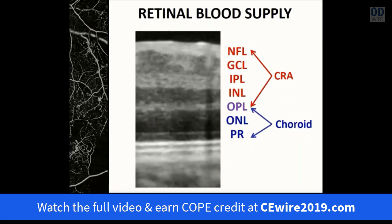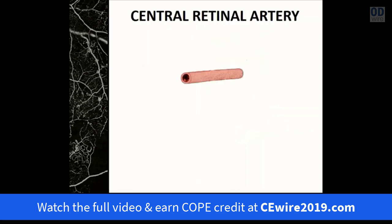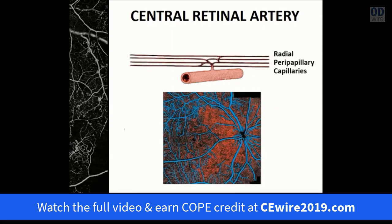The neurosensory retina is nourished by a dual blood supply, consisting of both the central retinal artery, which supplies the inner layers of the retina, and the choroid, which supplies the outer layers. The central retinal artery gives rise to three main capillary networks. The first is the radial peripapillary capillary plexus that nourishes the nerve fiber layer — most dense in the peripapillary area and the proximal temporal arcades.